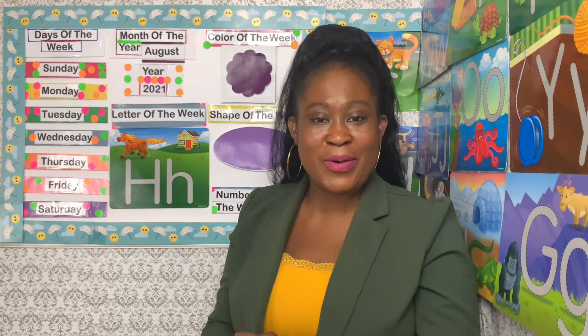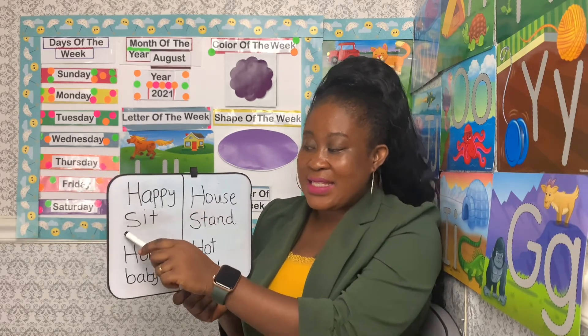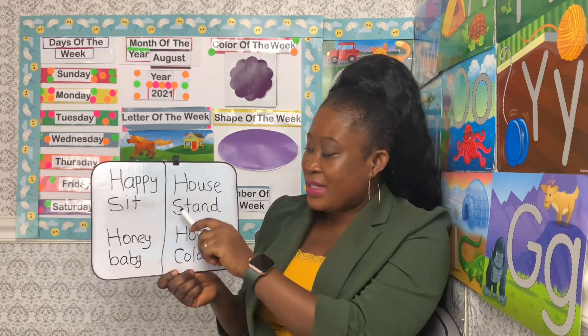We are done revealing our entire learning board. Let's move on to our special lesson. On Fridays, what do we do? I Spy day! Yes, on Friday we play the I Spy game. And today we are going to spy the letter H. We are playing the I Spy letter game using these words on the board. The words on the board are: happy, sits, honey, baby, house, stand, hat, cold.